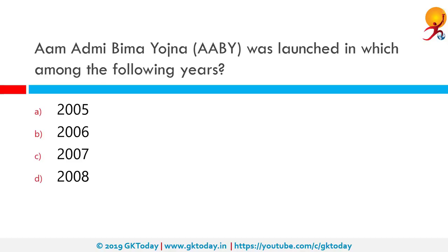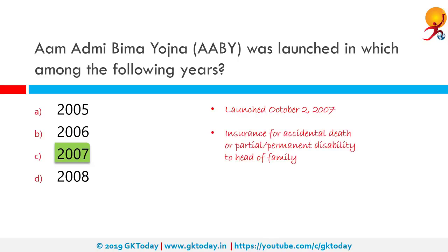Aam Admi Bima Yojana, or AABY, was launched in which year? It was launched on October 2nd, 2007 — the correct answer is 2007. It deals with insurance for accidental death and partial permanent disability for the head of the family of rural households. The head of the family or one earning member will be insured. The central government bears 50% of the sum and the other 50% is financed by the state government.